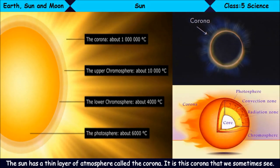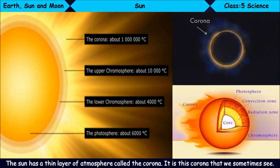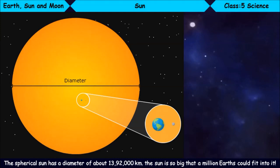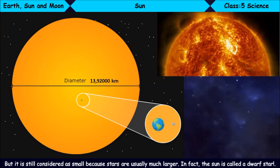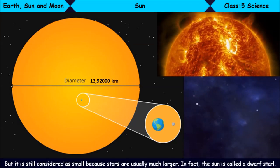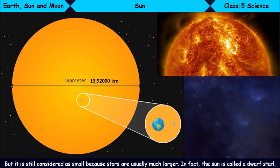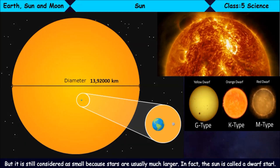The spherical Sun has a diameter of about 13,92,000 km. The Sun is so big that a million Earths could fit into it. But it is still considered small because stars are usually much larger. In fact, the Sun is called a dwarf star.